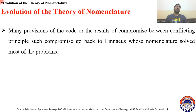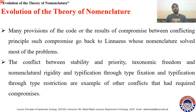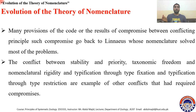Linnaeus introduced the binomial system and is considered the father of zoological classification. Conflicts requiring compromise include: stability versus priority, taxonomic freedom versus nomenclature rigidity, and typification through type fixation versus typification through type restriction. As discussed earlier, the principle of priority can be set aside where stability is harmed. These are examples of conflicts that required compromise in the development of the zoological code.